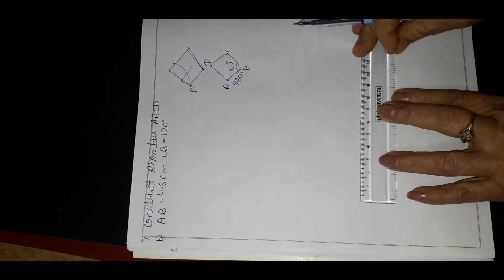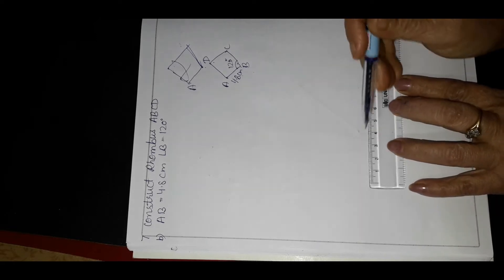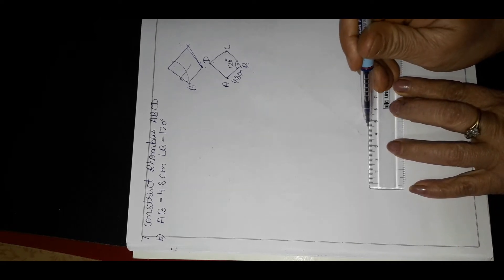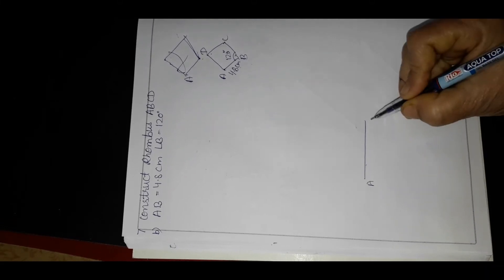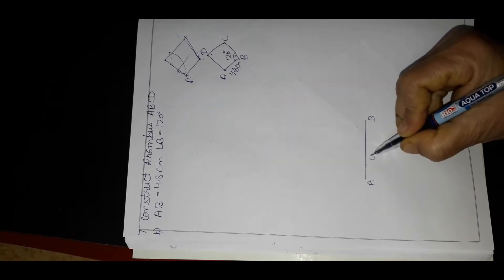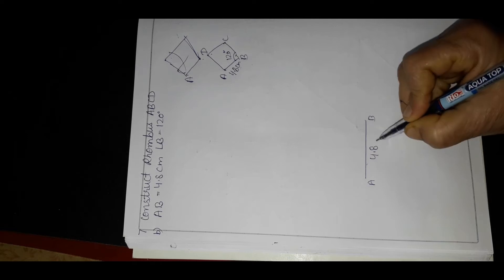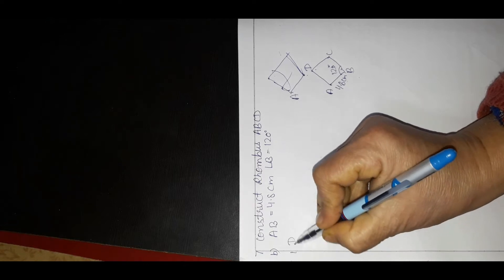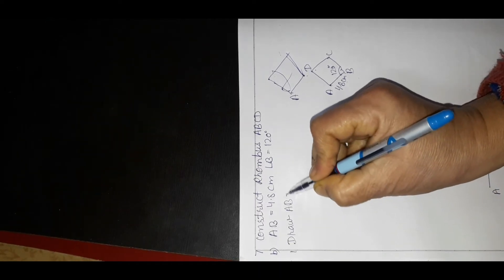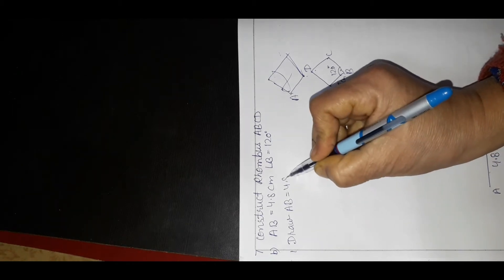First, draw AB equal to 4.8 cm. We draw A to B, 4.8 cm. So we write step one: draw AB equal to 4.8 cm.